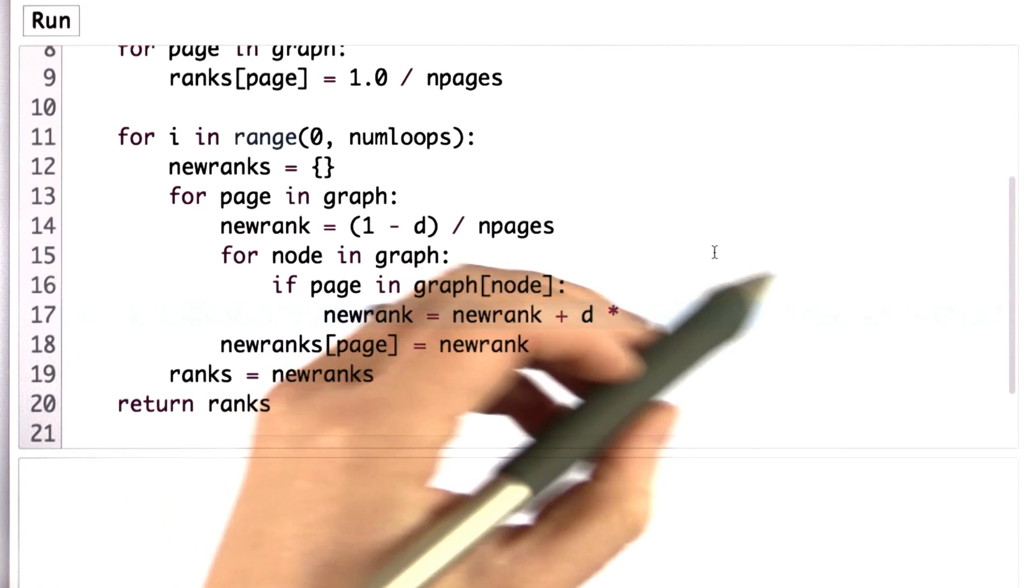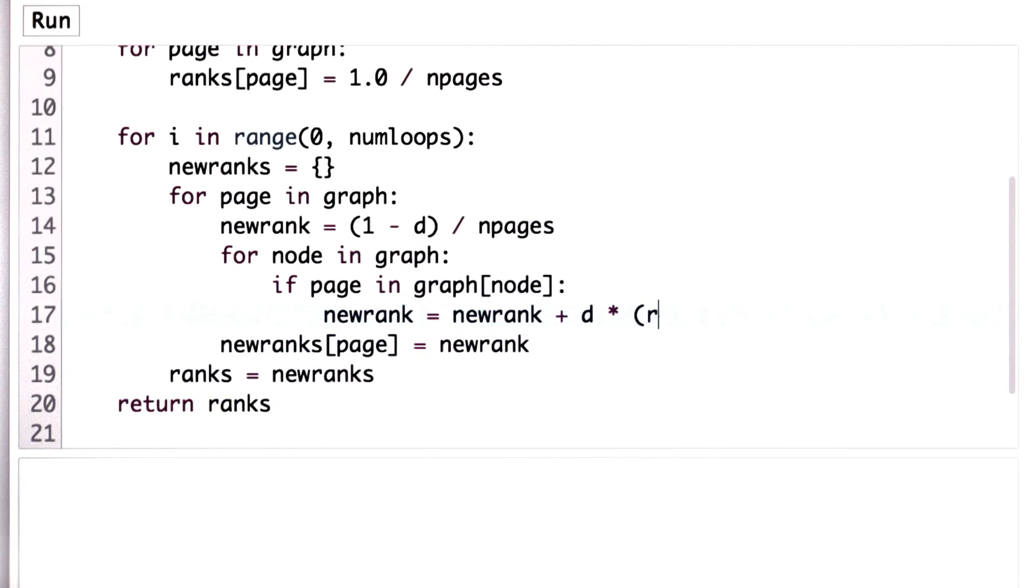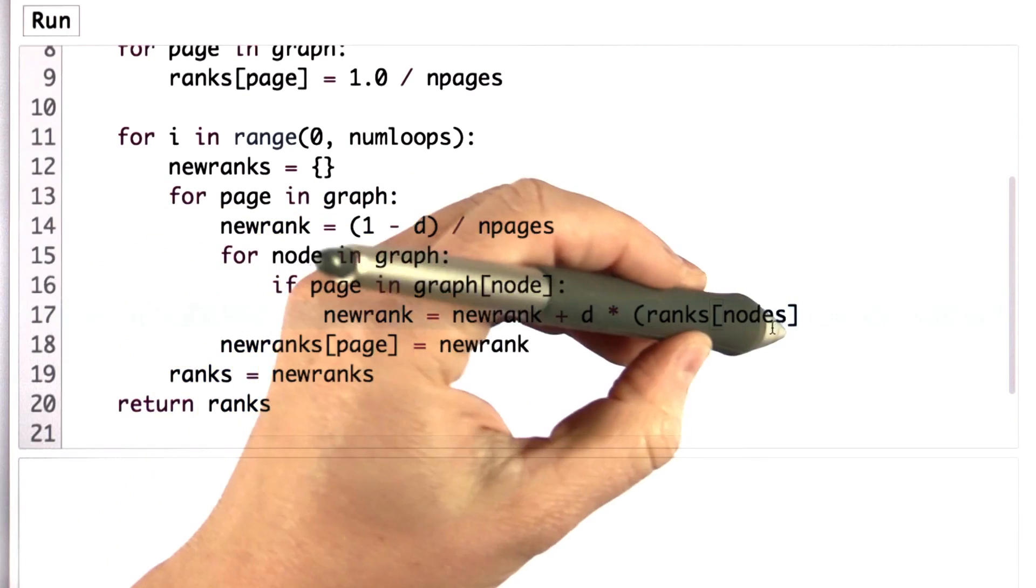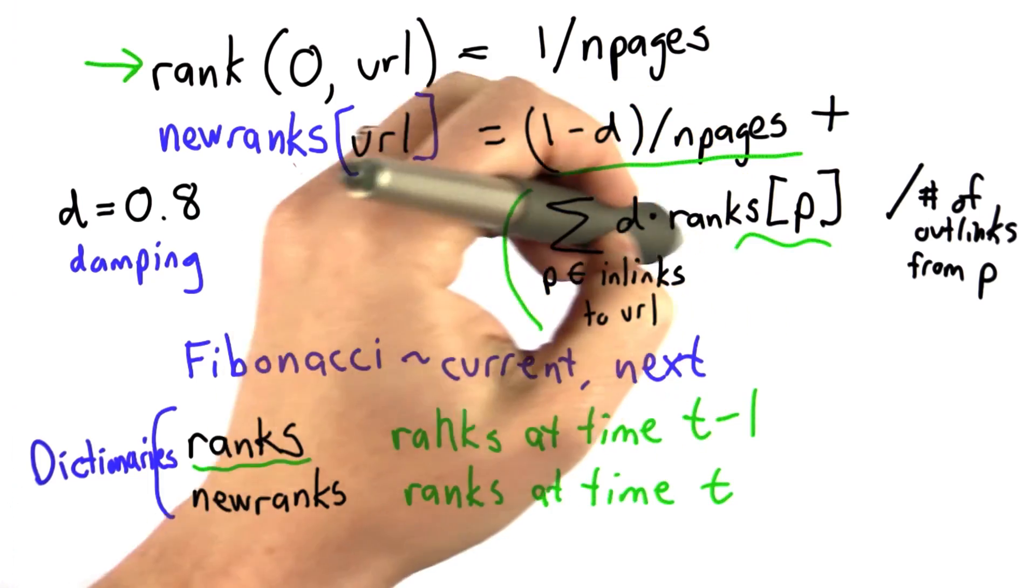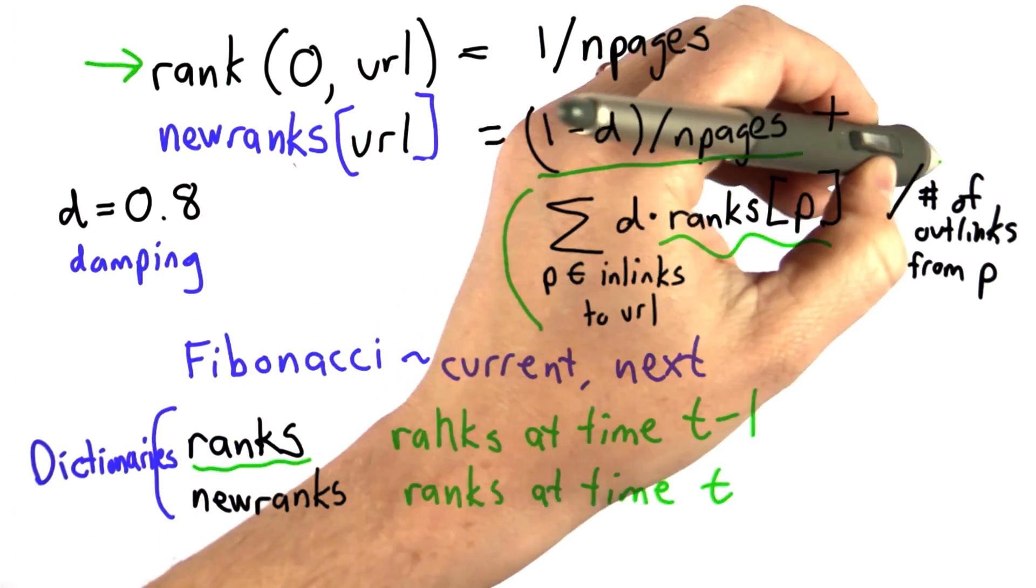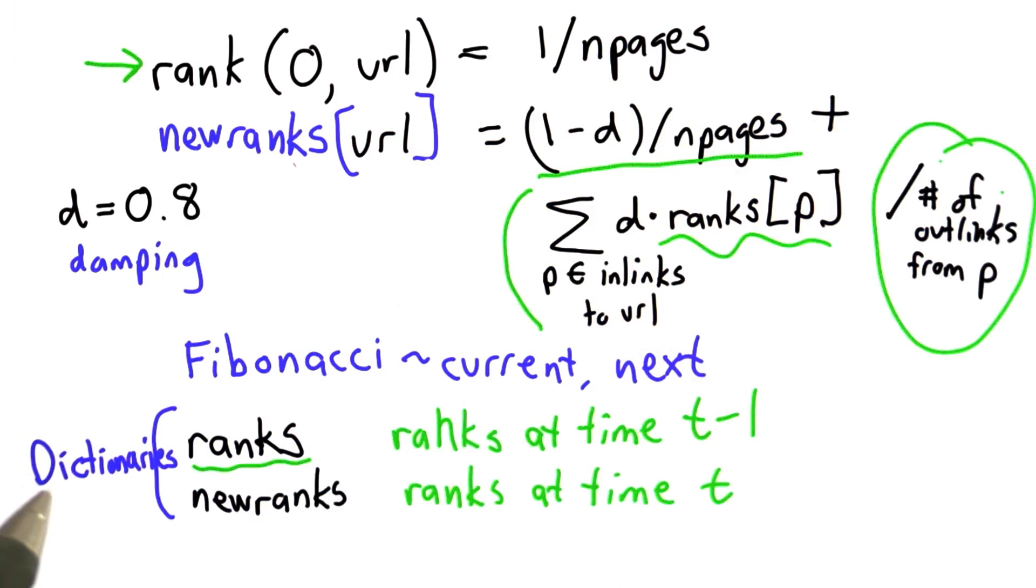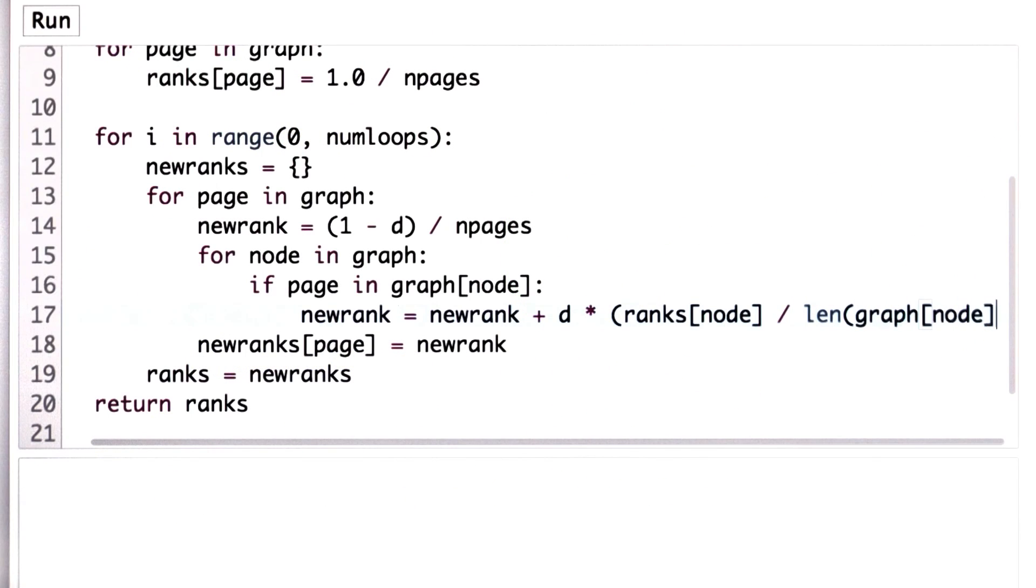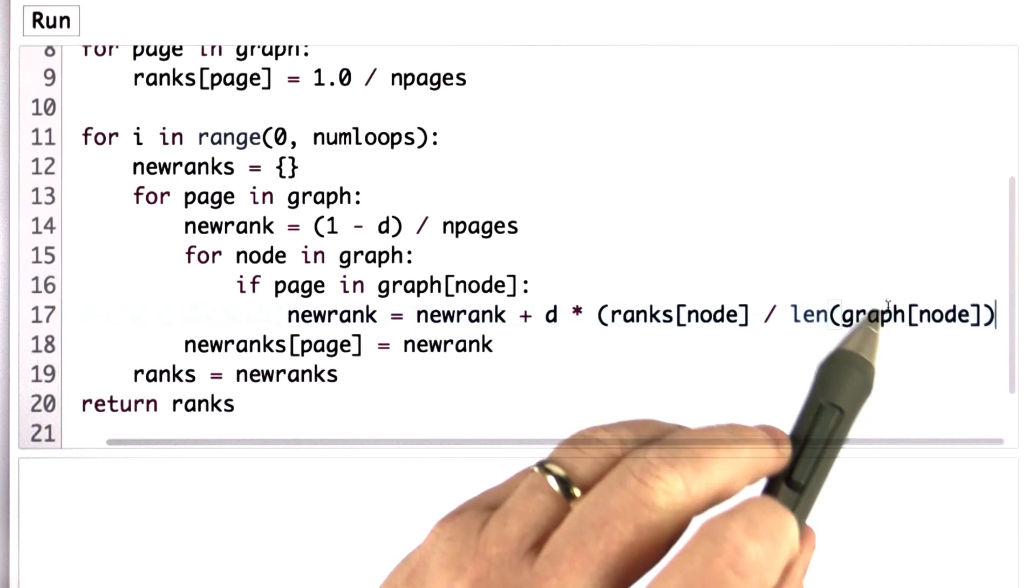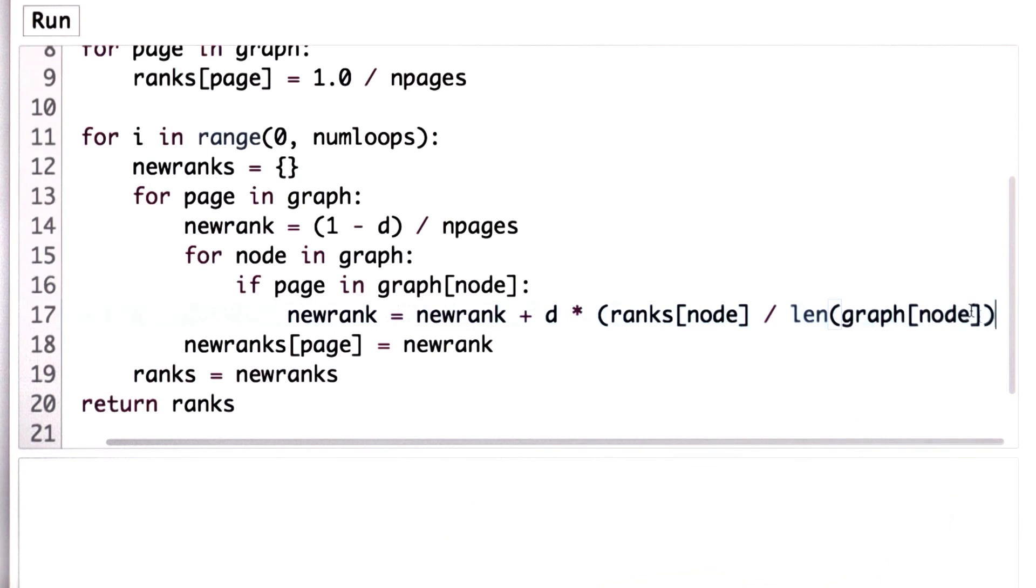And the value that we're going to use here is the page rank of the node. Remember, it's the node that links to this node that we care about. So we're getting the rank of the page. What we want to do is divide that by the number of outlinks from that page. And that's important. That means that each page with many links, the value of each link is less. We need to divide that by the length of that list, which is what we get by looking at graph index node.